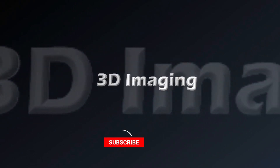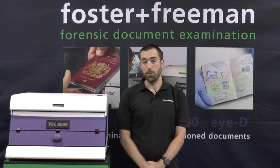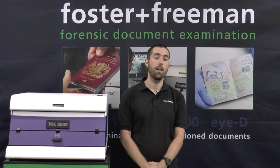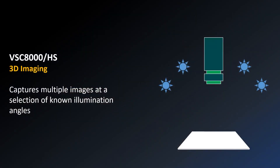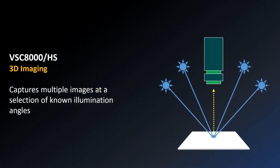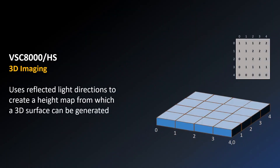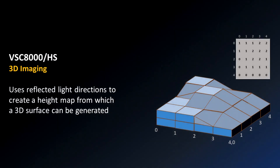The first technique we will be concentrating on is 3D imaging. This was first introduced on our VSE8000, and everything detailed here today is also relevant to the VSE8000, but we have made some improvements to the hardware and software on the VSE8000 HS. Essentially, the 3D imaging works by capturing a series of images taken with LED lights at different angles. The different angles of light create shadows and highlights on the surface of the document being imaged, and these images are then combined using advanced mathematical image processing functions to generate a 3D image of the surface.